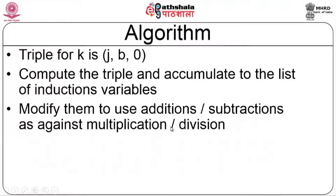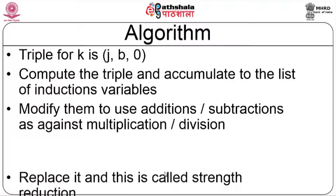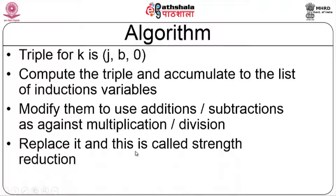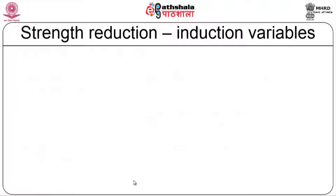After identifying induction variables, we modify them to use additions or subtractions instead of multiplication or division. This replaces the costly operation with a cheaper one — that is normally called strength reduction. So we first identify induction variables, basic or derived, and then perform strength reduction.